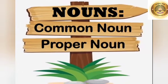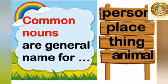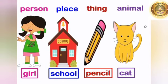Children, today we are going to learn our next chapter: Common Noun and Proper Noun. First, we discuss about common nouns. Common nouns are general names for a person, place, thing or animal. It begins with a small letter. For example, girl, school, pencil and cat. We are not talking about the name of a specific girl or specific school, so this is a common noun.